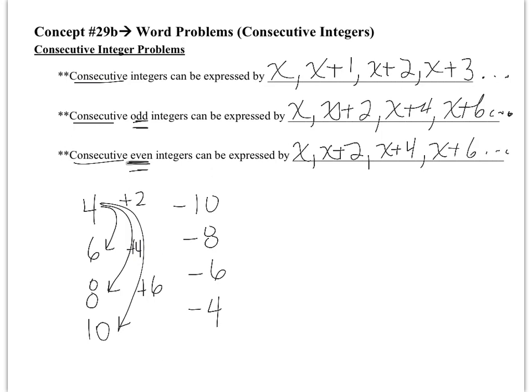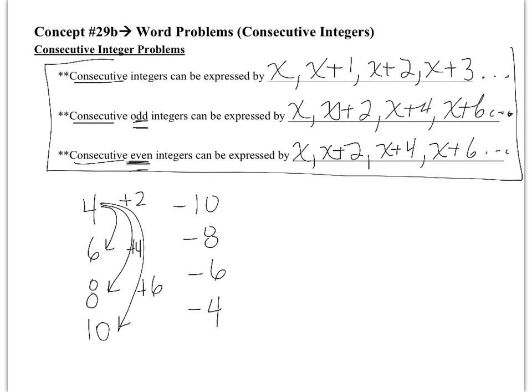Don't let the words even and odd mess you up. Odd numbers are all two away from each other — if you start with an odd number, you add 2 to get the next one, then 4 to get the next. Same with even. So consecutive even integers use the same labels: x, x plus 2, x plus 4, x plus 6, etc. These labels will be automatic every time you have a word problem that says consecutive integers, consecutive odd, or consecutive even integers.